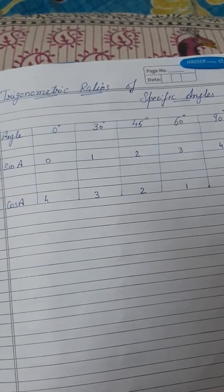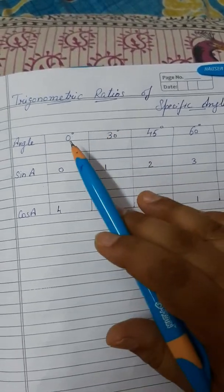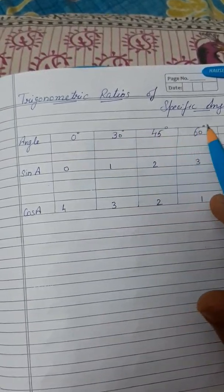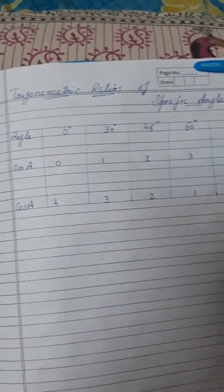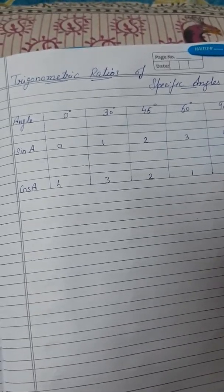So today I am going to discuss with the some specific angles like 0 degree, 30 degree, 45 degree, 60 degree and 90 degree. How we find out these angles?